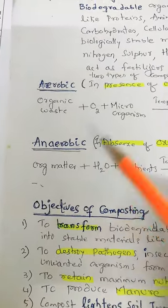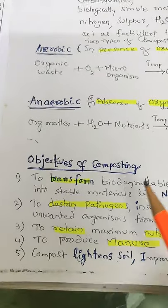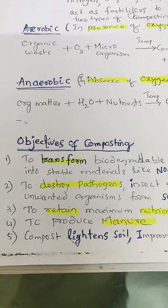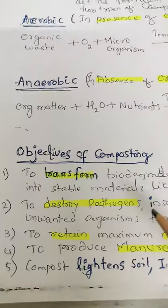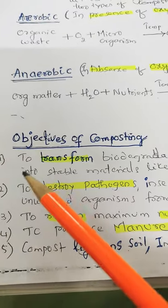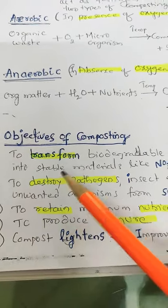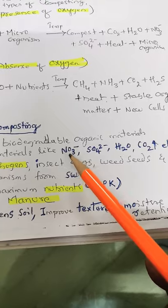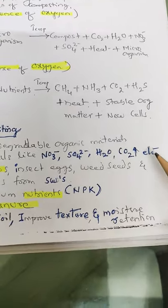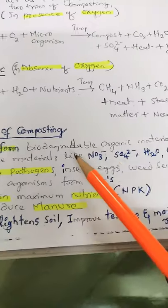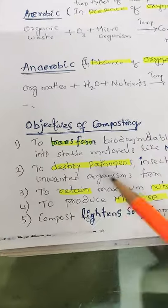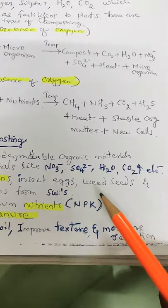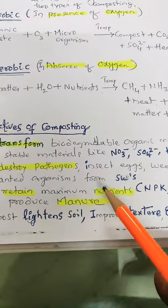So, those are the aerobic and anaerobic reactions. The main objectives of composting: the first aim or objective is to transform biodegradable organic material into stable materials like NO3, SO4, H2O, CO2, etc. — complex material should be broken into simpler ones. Second, to destroy pathogens — we have to destroy harmful insect eggs, weed seeds and unwanted organics from solid wastes.